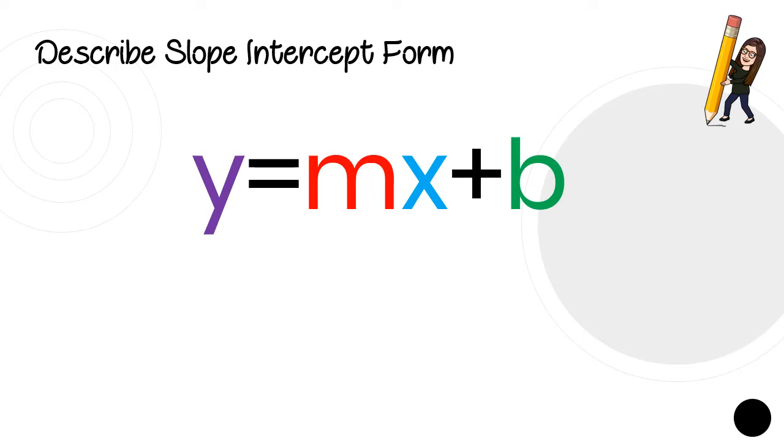Now in your notebook you definitely want to jot this slide down. This is going to be the basis or the main point of all your notes. We have been working with slope intercept form for a long time. So some things we already know. We already know that the M stands for slope.